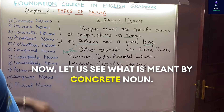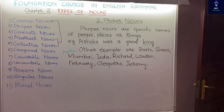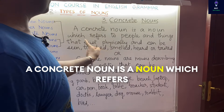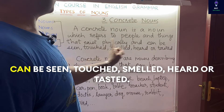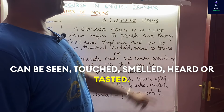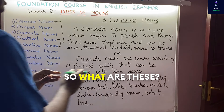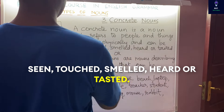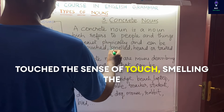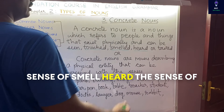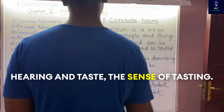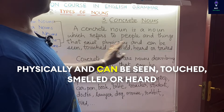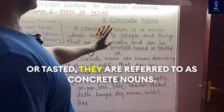Now let us see what is meant by a concrete noun. A concrete noun is a noun which refers to people and things that exist physically and can be seen, touched, smelled, heard, or tasted — that is, things perceived through our physical senses. Everything in this world that can be perceived with our senses and exists physically is called a concrete noun.